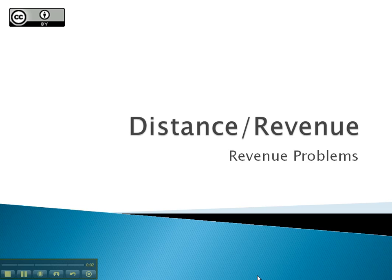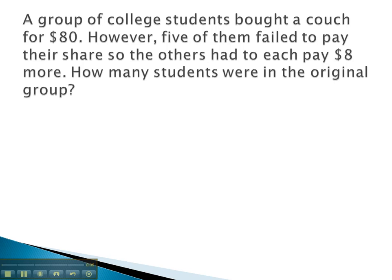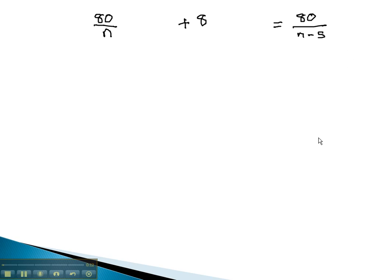In part 1 of this video, we began looking at revenue problems. We set up an equation to solve this problem regarding the college students buying a couch for $80. We ended up with this equation, which we're now going to solve.